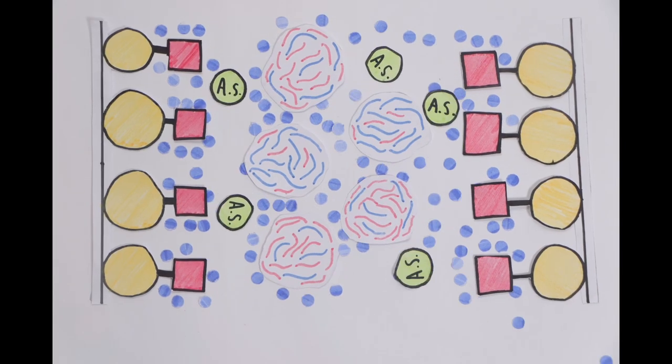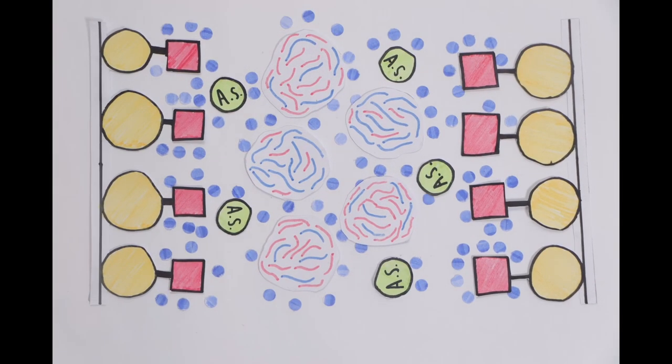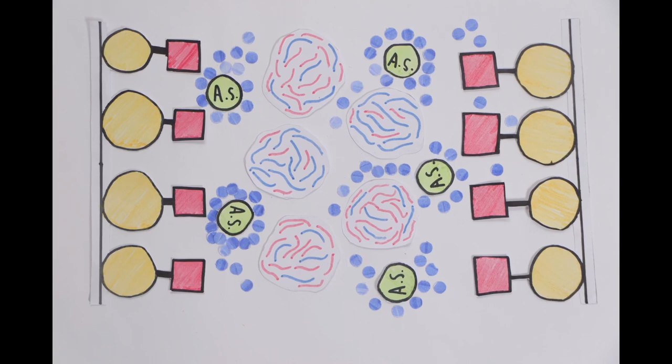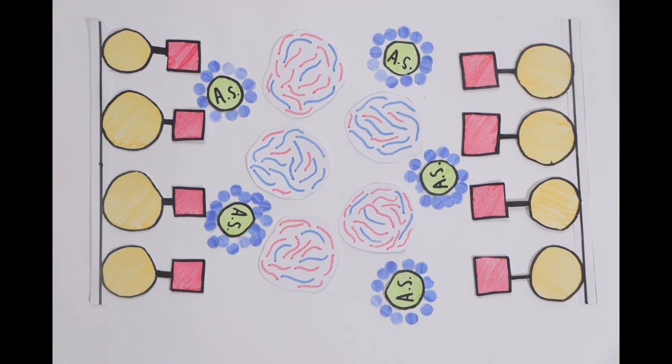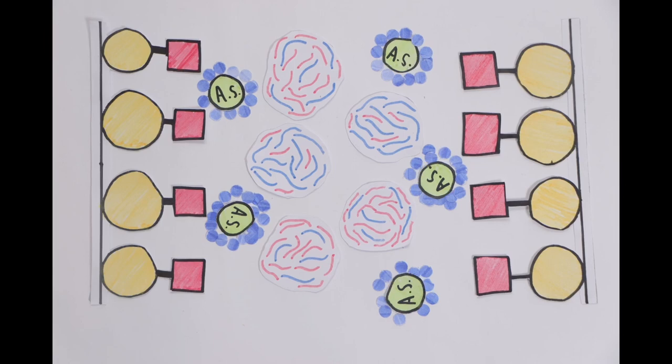Ammonium sulfate is added to increase the salt concentration in the column. The ammonium sulfate salt draws water molecules towards itself, exposing the hydrophobic areas on both the protein and the matrix.